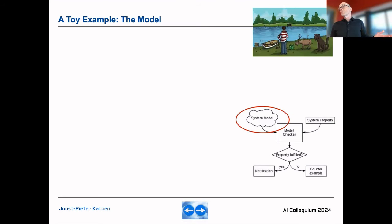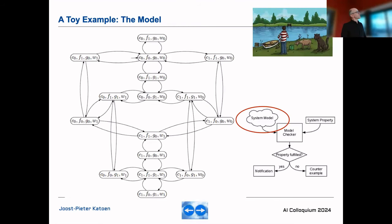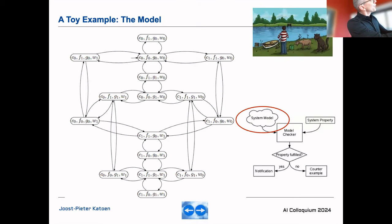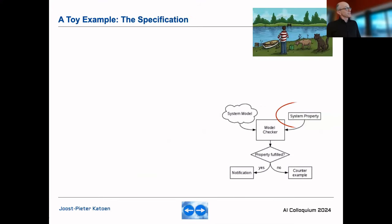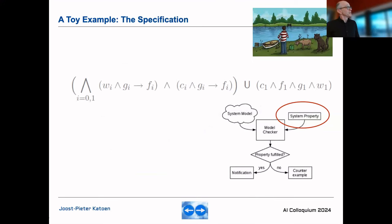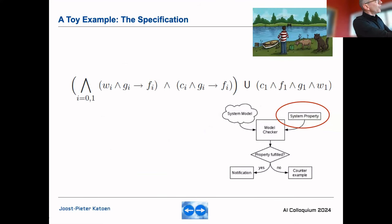To apply model checking we need a model that describes all possible behaviors. Initially the cabbage, ferryman, goat, and wolf are on riverbank index zero. Going right means the cabbage and ferryman move to the other side while the goat and wolf stay. You continue through all possible scenarios — that's the model. The specification says all objects need to be at the other riverbank, index one.